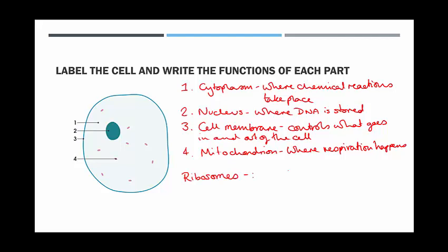Finally, and missing from the diagram, so if you didn't write it down, don't worry, but pop it in your notes now, we've got ribosomes. Ribosomes are like tiny dots in diagrams, and they are where proteins are made.